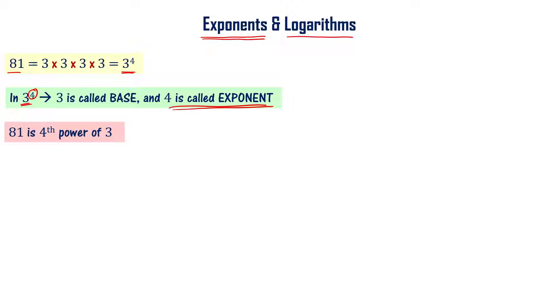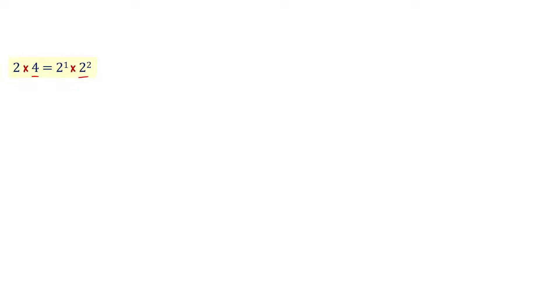8 can be written as 2 cube, where 2 is the base and 3 is the exponent. Also, 2 times 4 can be written as 2 power 1 times 2 power 2, since 4 is 2 squared and 2 is 2 power 1. Since the base is the same, we can write this as 2 power 1 plus 2, which is 2 cube, and 8 equals 2 cube.